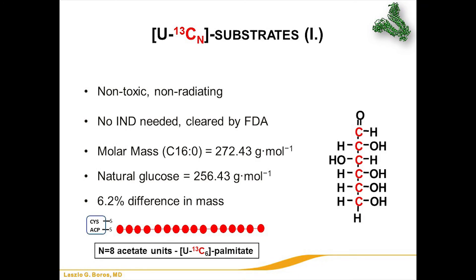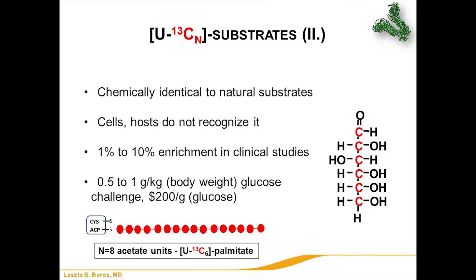We can use these tracers in metabolic studies. For example, the molar mass of palmitate is 256, and replacing carbons with C13 — each adding one dalton — increases the mass by the number of labeled carbons, about a 6.2% change. Cells don't really notice this; they can utilize the tracer without any measurable biochemical difference, metabolizing it totally without an isotope effect — especially at the enrichment we give, usually 0.5 to 1 gram per kilogram in human studies.